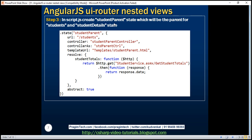The third step is to create our student parent state, which is going to be the parent for both students and student details states that we already have. The name of the state is studentParent, and the state configuration object has a URL, its own controller and template using controller-as syntax, and a resolve property. This resolve property issues an HTTP call to the GetStudentTotals web service method, and the returned data is stored as the resolved property studentTotals. This will be available to the parent controller function as well as all child controller functions.